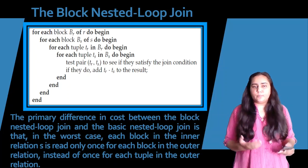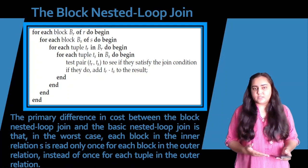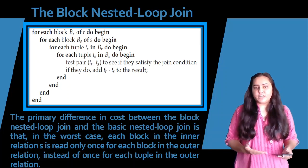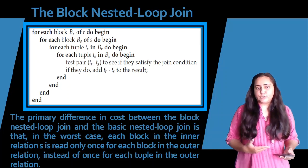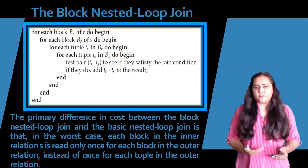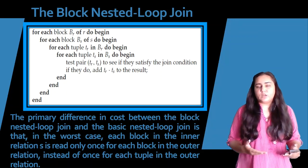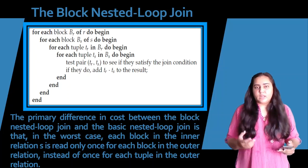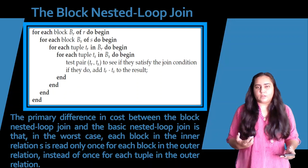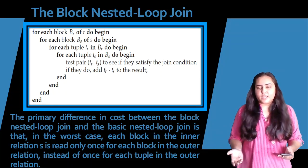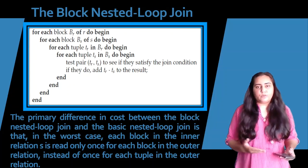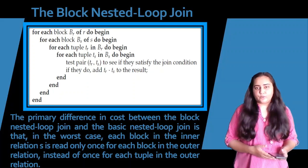The primary difference in cost between the block nested loop join and the basic nested loop join is that in the worst case, each block in the inner relation S is read only once for each block in the outer relation, rather than once for each tuple in the outer relation. In the basic nested loop join you must match every block of R with every block of S repeatedly, requiring many re-reads from secondary memory. With the block nested loop join, you only need to read all blocks of S once per block of R.